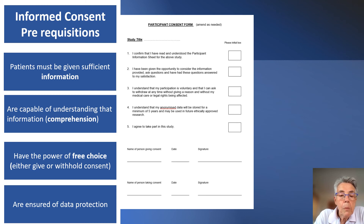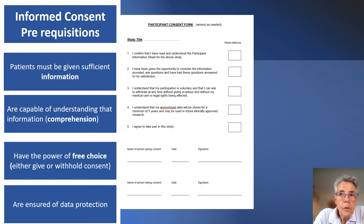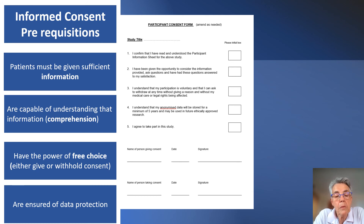The prerequisites of informed consent: participants must be sufficiently informed on the type of research or intervention being proposed. They must have the cognitive capacity to comprehend that information. They must have the power of free choice — informed consent can be given or withheld at the participant's discretion. And another prerequisite is that they must be assured that the data they are providing is properly protected.